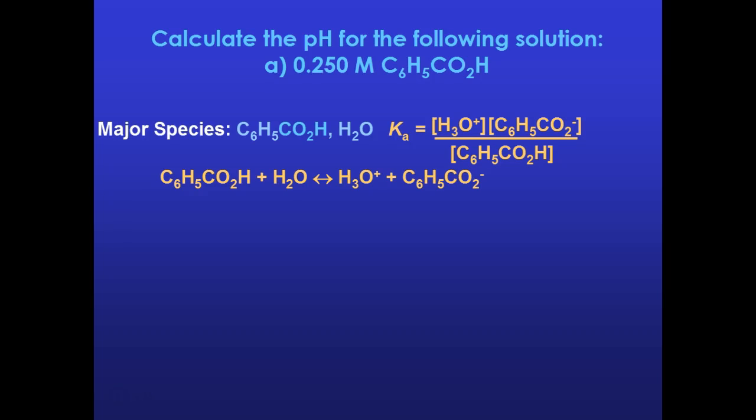So if I was going to write the K expression, it would be the two products, H3O+ and C6H5CO2- over the initial acid, C6H5CO2H. And from my chart, I can see that the K value for that expression is equal to 6.3 times 10 to the negative 5. It's a fairly small K value, which means a very small amount of that original acid truly goes through dissociation.